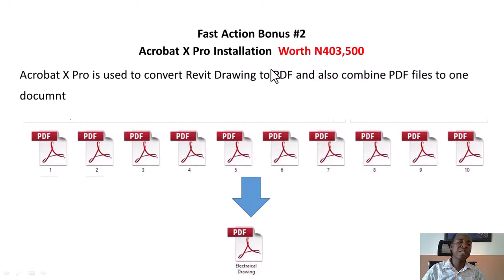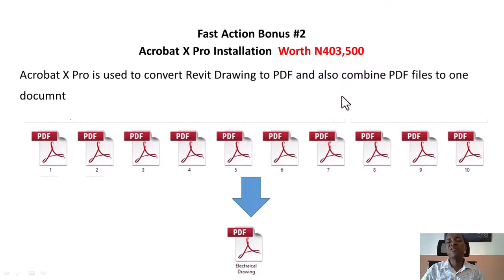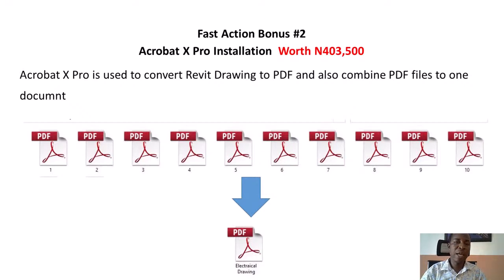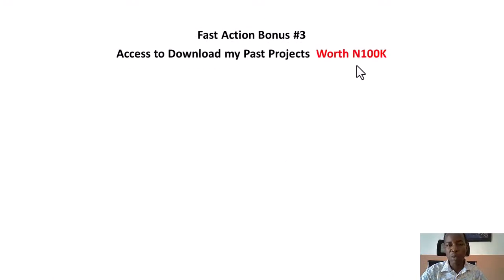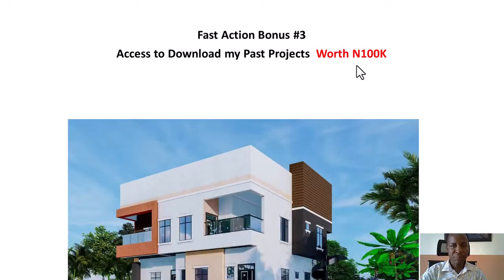The worth of Acrobat X Pro is 403,500 Naira — you can browse it on the internet to see the current cost of this software. But if you are getting Revit today, you are getting everything for free. You only need to pay for my course and that is all. Fast action bonus number 3: you are going to get a Revit project file for free. I am going to send you the Revit file of a project I did for one of my clients, and the worth of this project is 100,000 Naira.